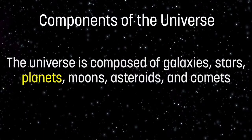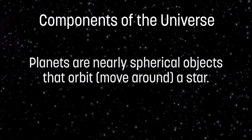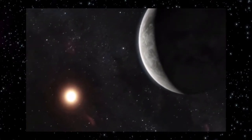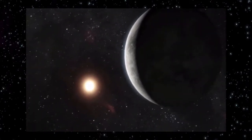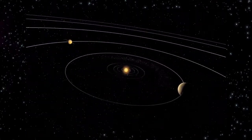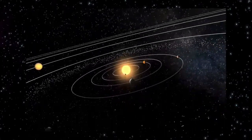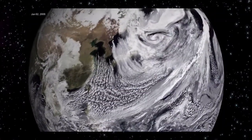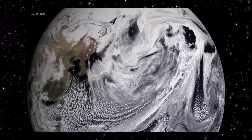Our next component are planets. Planets are nearly spherical objects that orbit — which means move — around a star. In our solar system, planets orbit the sun. Each planet has unique characteristics based on how it formed and where it is relative to the sun. Planets can either be rocky or terrestrial, or gaseous Jovian. In addition to our eight well-known planets, there are actually several dwarf planets orbiting the sun.